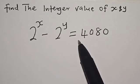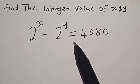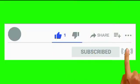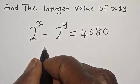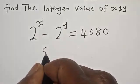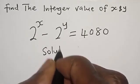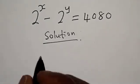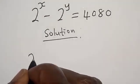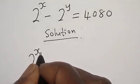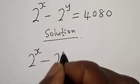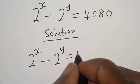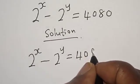But before we move on, please like, share, comment and subscribe. Thank you. Let's start with the solution. 2 raised to power x minus 2 raised to power y is equal to 4080.